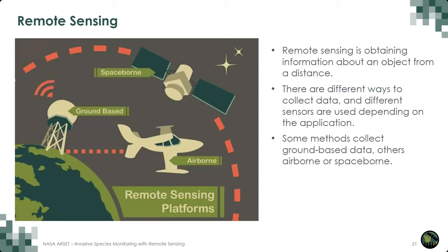So what is remote sensing? Remote sensing is the science of collecting information about an object from a distance. This could be done in a variety of ways, including ground-based, airborne, and space-based methods. Remote sensing is helpful in that it allows for large area monitoring with measurements that are consistent, objective, and repeatable. It also allows us to compare with ground measurements, offers a time series capability, and helps us learn about remote locations that are difficult to access. Different sensors are used depending on their application.